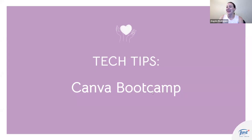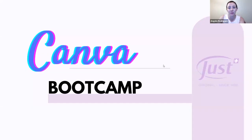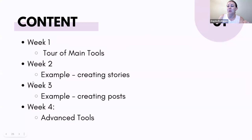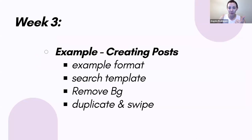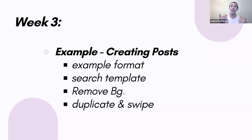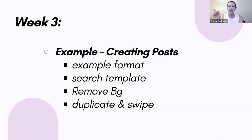Now we're going to continue with Canva Boot Camp — short and sweet. We've already talked about the different Canva tools available for making images for posts and stories. This week we're focusing on creating posts. I'll give you a simple format: how to create posts, how to organize them, how to search templates, and we're going to talk about a website called remove.bg which removes the background of images. If you grab a juniper cream image from the website and want to remove that white box background — there's a free website that does it really easily.